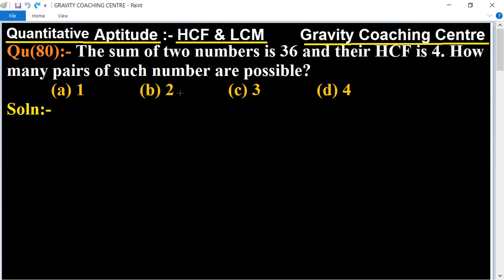In this question, the sum of the two numbers is given as 36 and their HCF is 4. So how many such numbers are possible? First, we let the two numbers be...